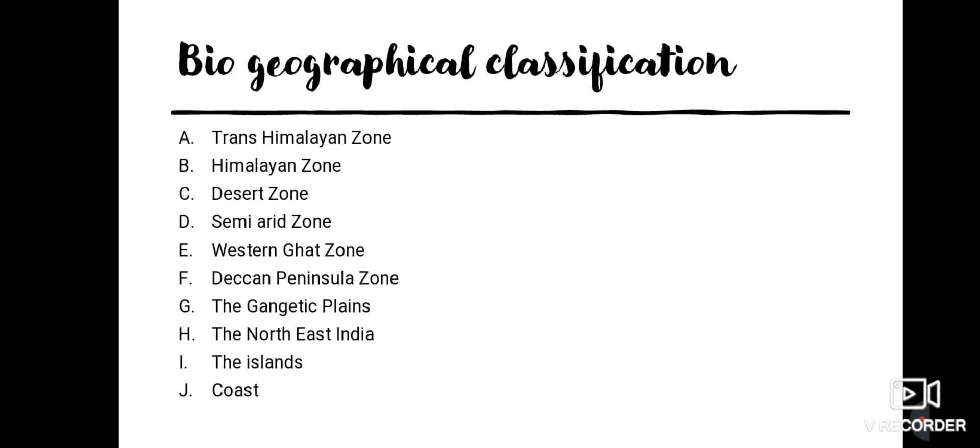The next zone is Northeast India, where rainfall will be more than 1000 mm — a heavy rainfall area. Cherrapunji is a part of this region. There will be dense tropical evergreen forests in this zone.